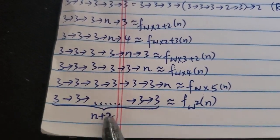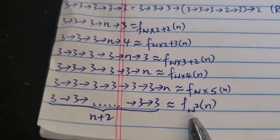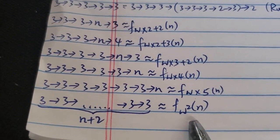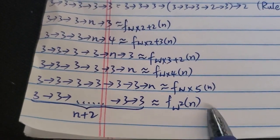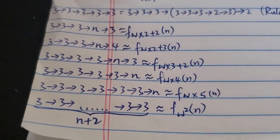And at the end, 3→3→3→3→3→3 with N+2 number of 3s, the growth rate is around f_ω²(N). And this is kind of the limit for the regular chain arrow notation.